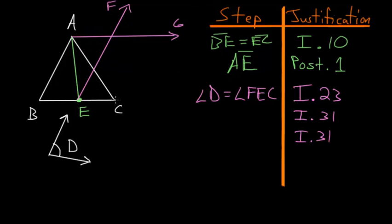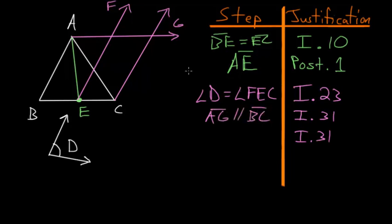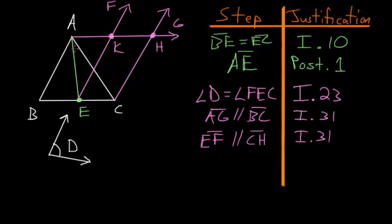We draw a line through C parallel to EF. So we now have: line AG is parallel to line BC, and line EF is parallel to line CH. We label the point up here H, and we also label this point K.